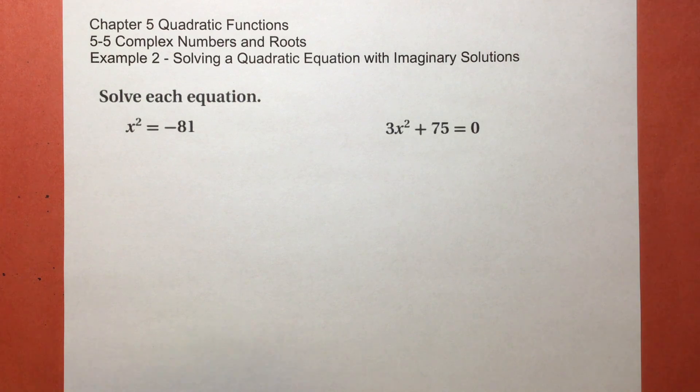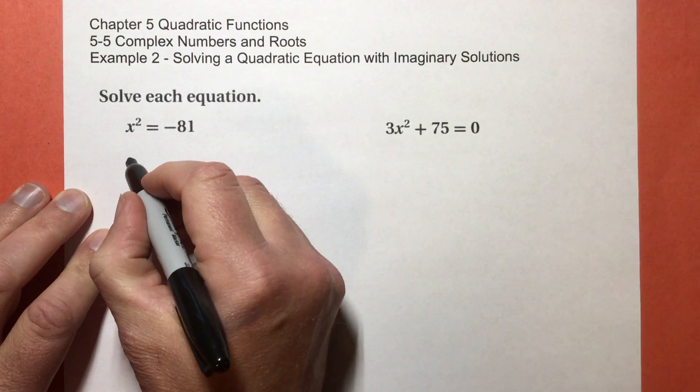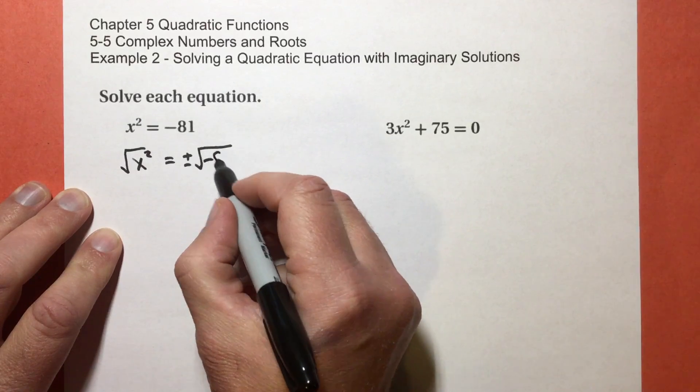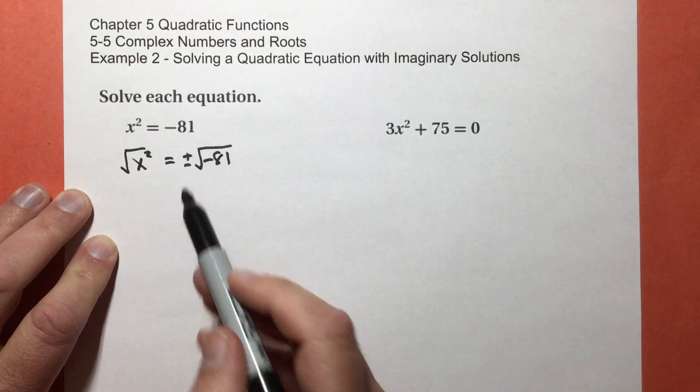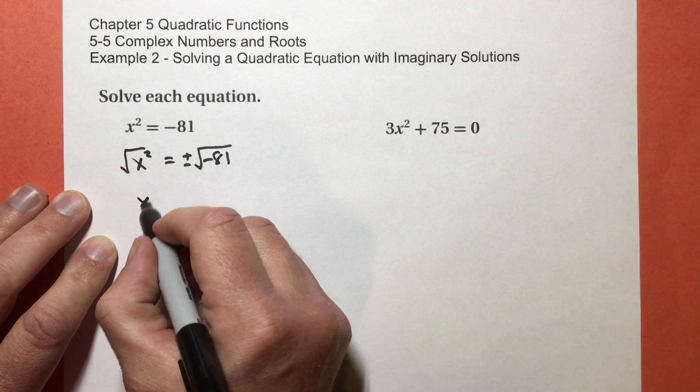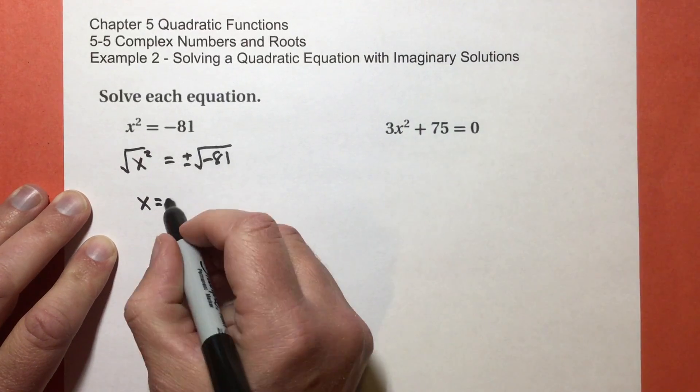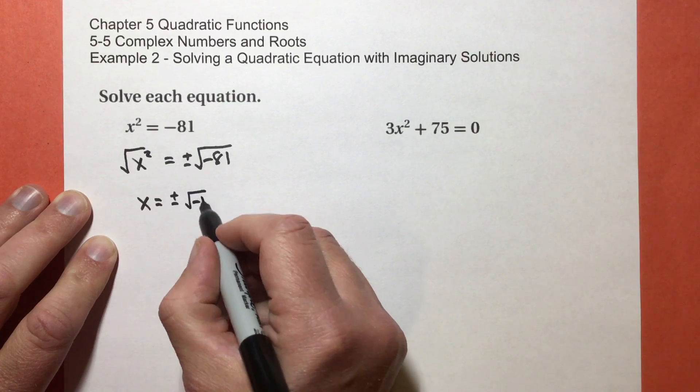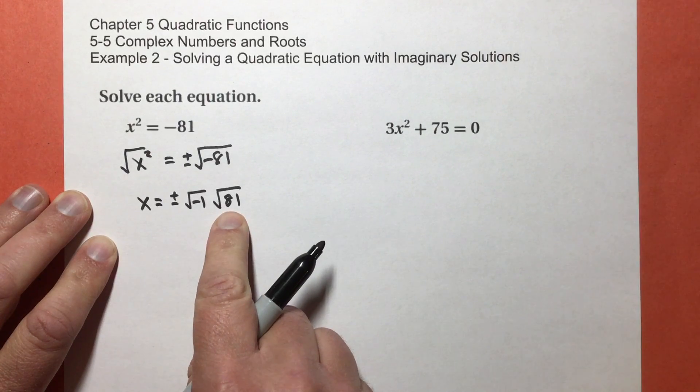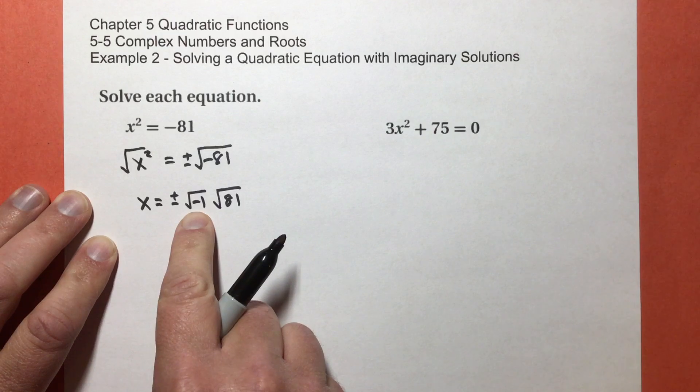But in order to make it work, this is where we introduce the idea of imaginary numbers, or like we said, I like to call them lateral numbers. So I'm gonna take the square root of both sides, and don't forget you get two roots, one positive one negative. The square root of -81 is the square root of -1 times the square root of 81. 81 is a perfect square, so that's going to be 9. The square root of -1 is i.